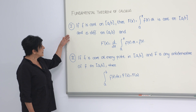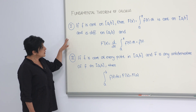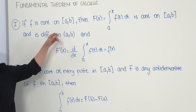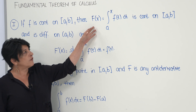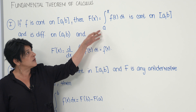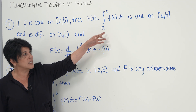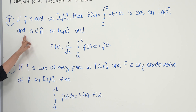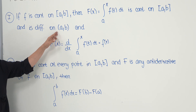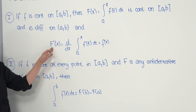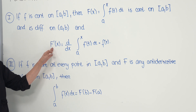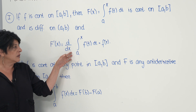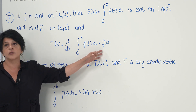It combines two parts. The first part says that if f is continuous on the closed interval [a, b], then F(x), defined as the integral from a to x of f(t) dt, is also continuous on the closed interval [a, b] and differentiable on the open interval (a, b), and the derivative of F(x) with respect to x is equal to f(x).